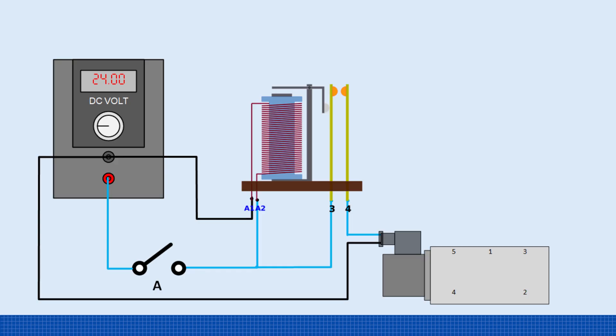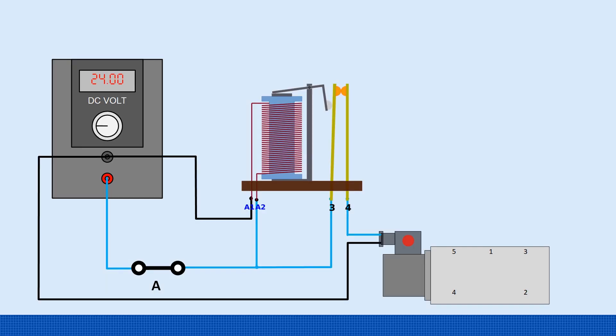Now we can use the relay to power other devices or connect its contacts to a different circuit. For instance, we could hook it up to a solenoid valve. Once the relay is powered, contacts close and power the solenoid.